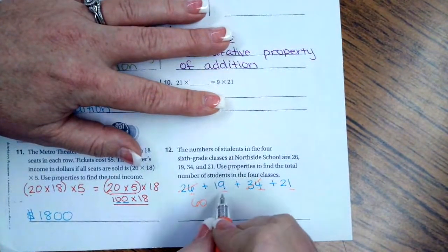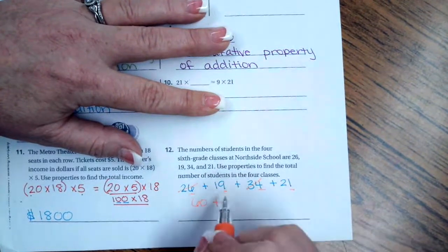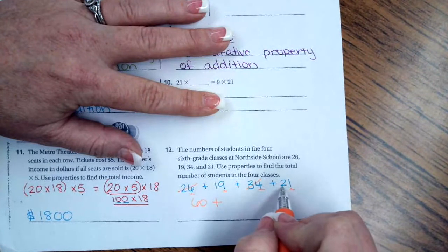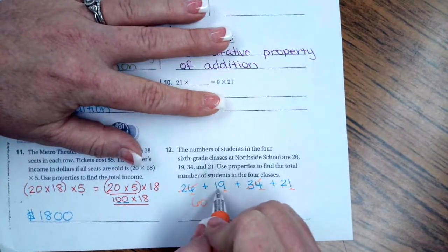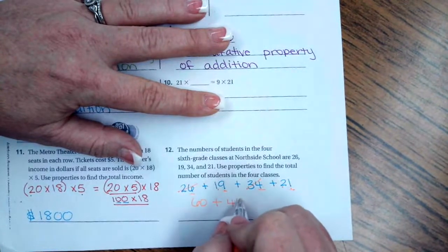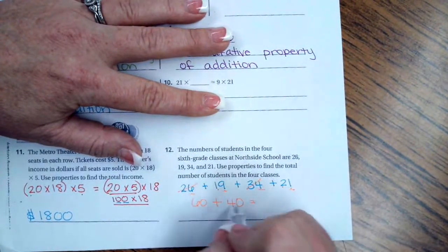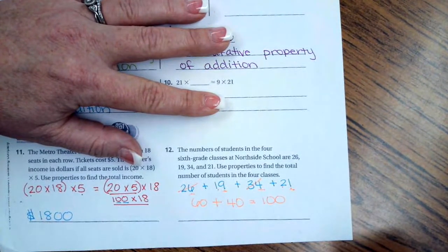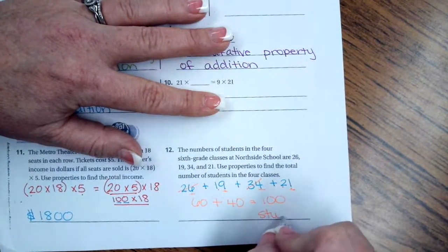Now I also know that nine plus one is 10. So I'm going to say nine plus one is 10 plus two more tens is three tens plus one more 10 is four tens. Well, that's 40. So 60 plus 40, well, six plus four is 10. And then I'm going to put the extra zero on the end. So 100, and we're going to label that students.